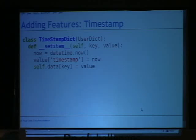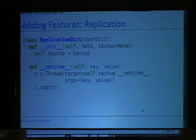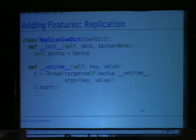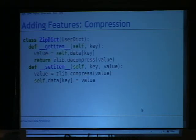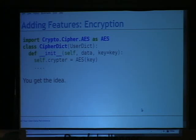Let's say we want to add a timestamp so we know when the dictionary was created — on __setitem__ we add a timestamp to the document. What if you want to replicate your database? You can spawn a thread at very little cost that sets the item on the backup database and then proceeds with the set. You can also add compression and encryption — not very hard. Encryption would allow your application to get the key at runtime while the data is stored in an encrypted format.